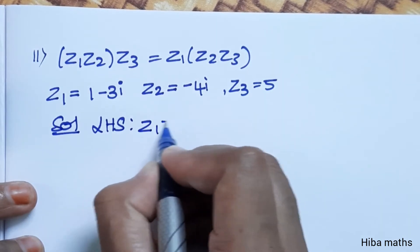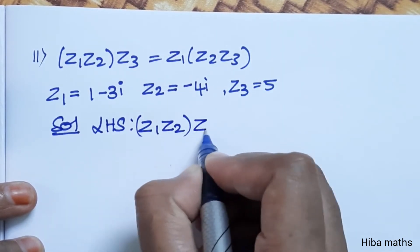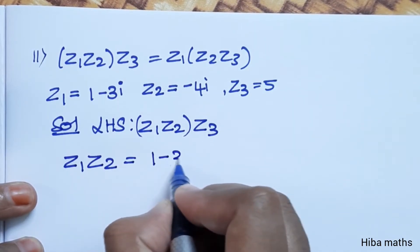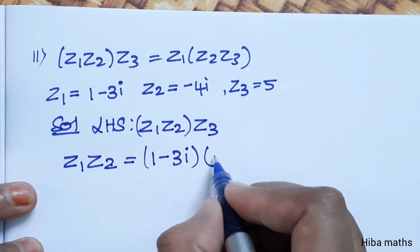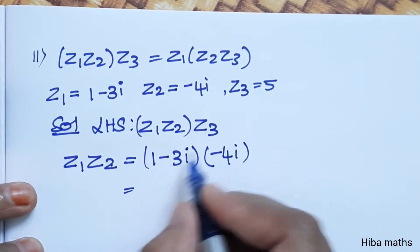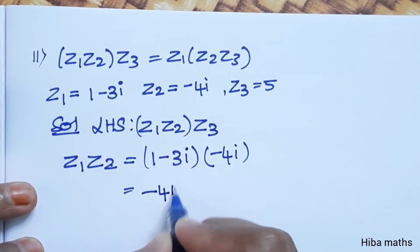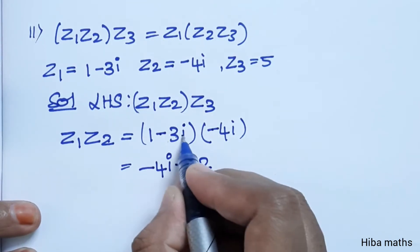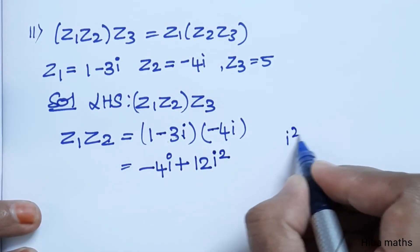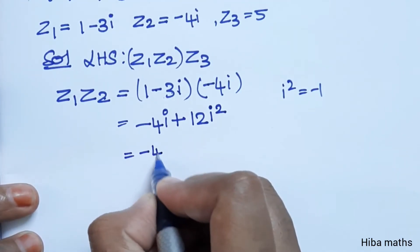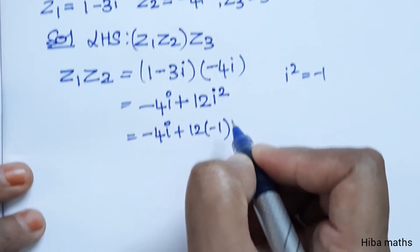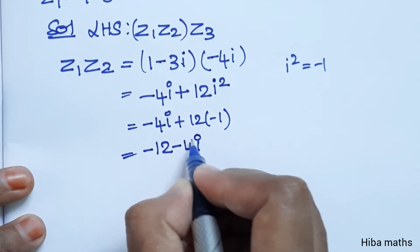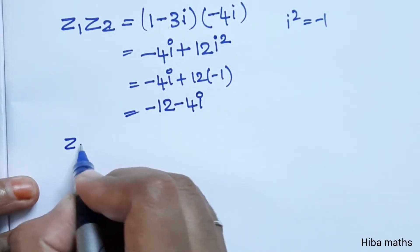For LHS, first solve z1 into z2. z1 is 1 minus 3i, multiplied by z2 value minus 4i. Inside multiplication: 1 into minus 4i is minus 4i, and minus 3i into minus 4i is plus 12i squared. Since i squared equals minus 1, this gives minus 4i plus 12 into minus 1, which is minus 12. So z1 into z2 equals minus 12 minus 4i.